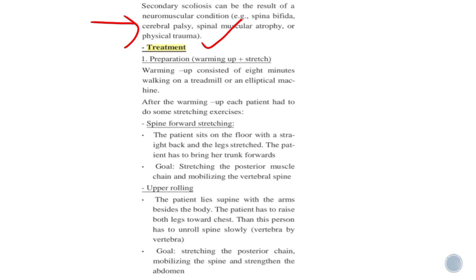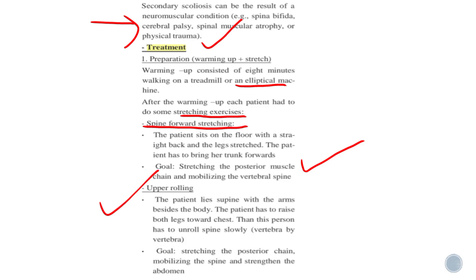The treatment for scoliosis begins with preparation: warm-up plus stretching. Warm-up consists of eight minutes walking on a treadmill or elliptical machine. After the warm-up, each patient performs stretching exercises — do not go for stretching exercises before warm-up. For spine forward stretching, the patient sits on the floor with a straight back and brings the trunk forward. The goal is to stretch the posterior muscle chain and mobilize the vertebral spine.